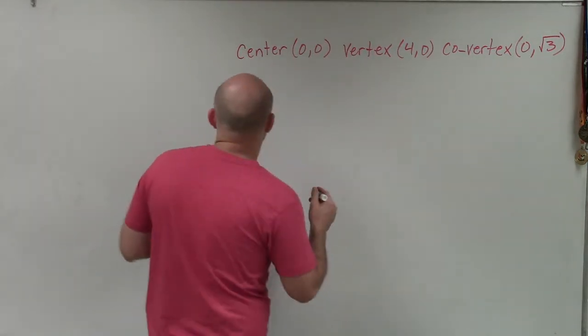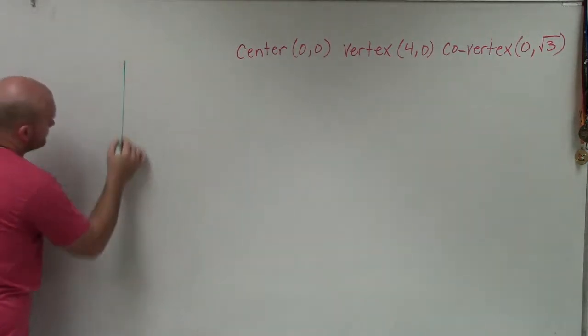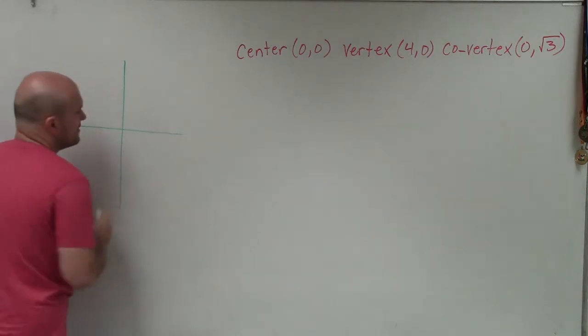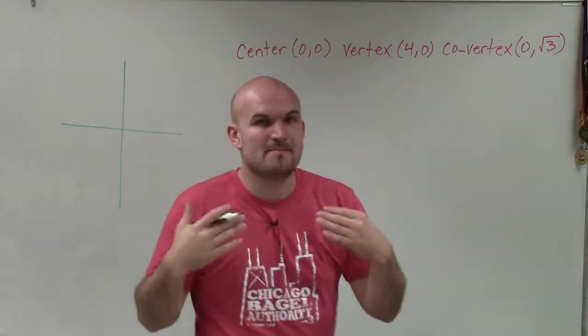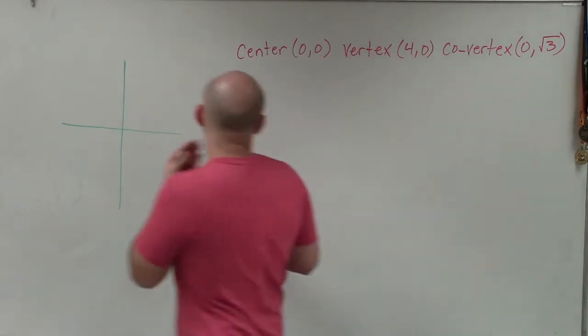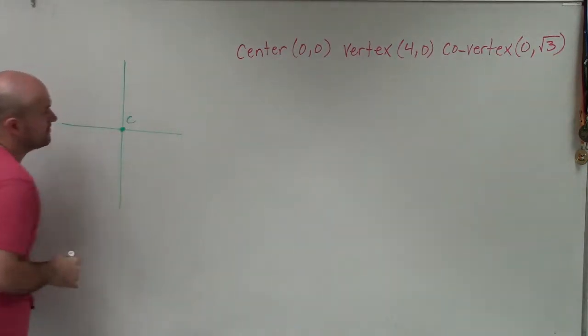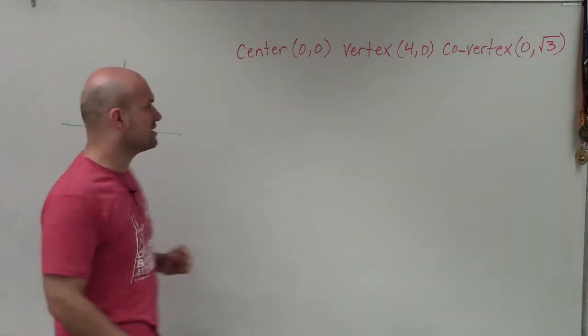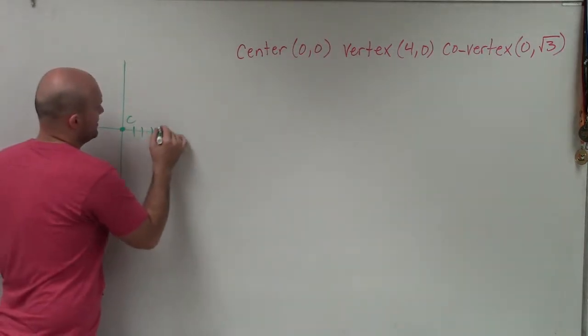The first thing I'm going to do is plot the information I'm given, because that will give me a basic understanding of this problem. The center is at (0,0). The vertex is at (4,0) - 1, 2, 3, 4.